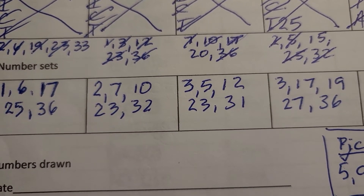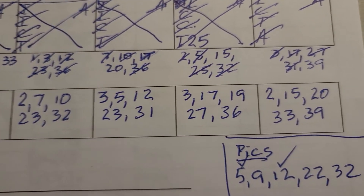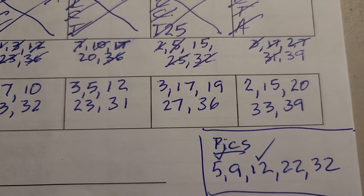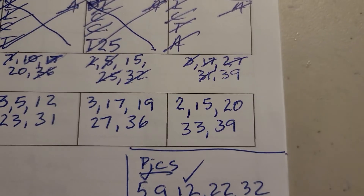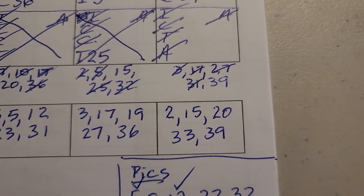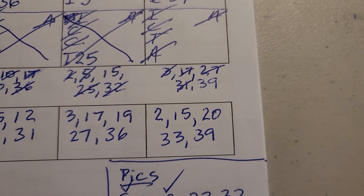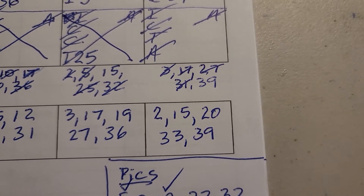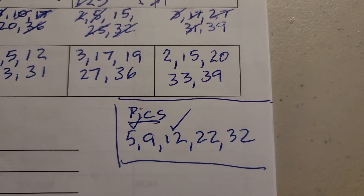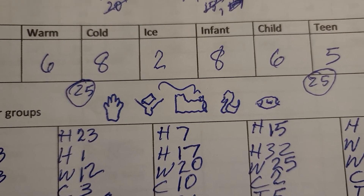The second set is: 2, 7, 10, 23, 32. The third set is: 3, 5, 12, 23, 31. The fourth set is: 3, 17, 19, 27, and 36. The fifth set is: 2, 15, 20, 33, and 39.